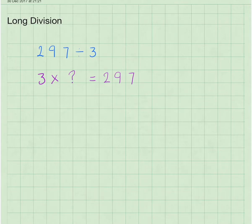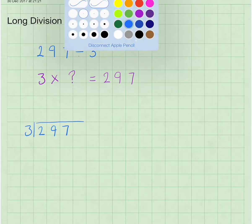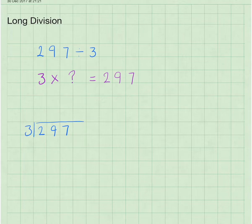So let's get started. If we set this up as we have before with the 3 outside the symbol that shows that you're dividing and the 297 inside, and then we'll do our 3 times table to help us.